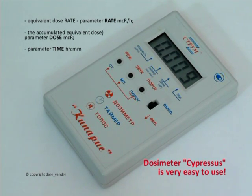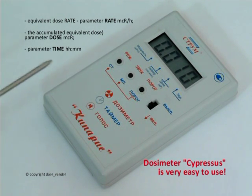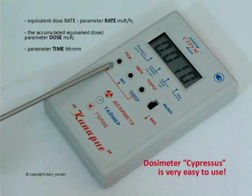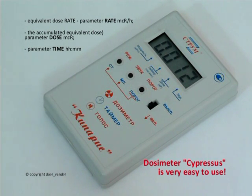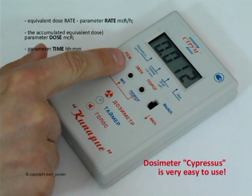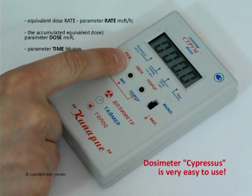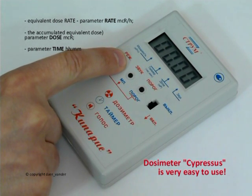The choice of the parameter to display is made by pressing the Mode button, button number 1. Pressing it cycles through Rate, Dose, and Time.